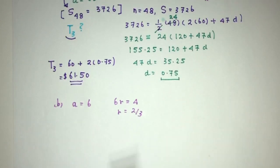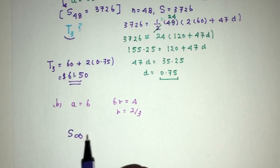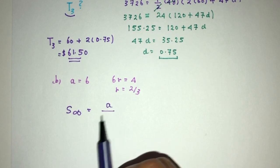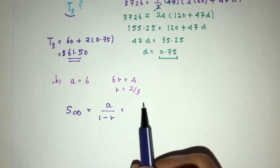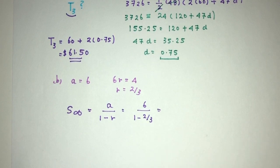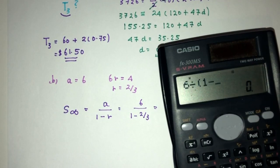And we have to find the sum to infinity. Now, again, this is a formula we are given. We have to know as well. Given to you on the list, that will be A over 1 minus R. A is 6. 1 minus R will be 2 over 3. So 6 divided by 1 minus 2 over 3, that should be 18.